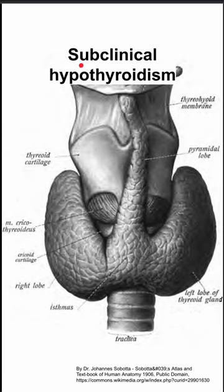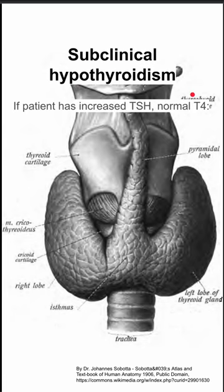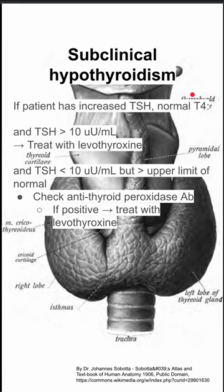Here are some notes on how to treat subclinical hypothyroidism. This is when a patient has increased TSH but normal T4, and the treatment of this problem involves how much the patient is showing symptoms.